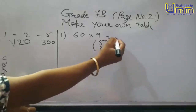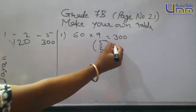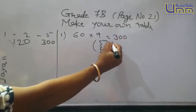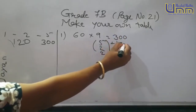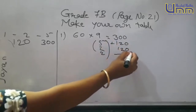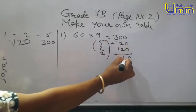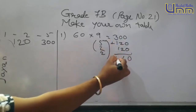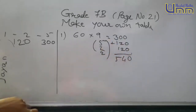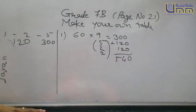Ab 5 ki value put up karenge: 300. Plus 2 ki value 120, again 2 ki value 120. So 0, 2 plus 2 = 4, 3, 4, 5. First answer: 540.